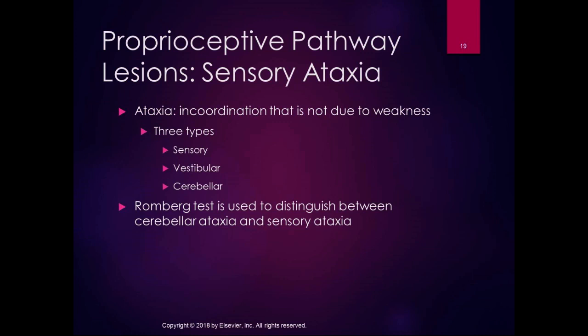The Romberg test — single leg balance with eyes open and eyes closed — is used to distinguish between cerebellar and sensory ataxia. Because sensory information provides position sense, if you close your eyes and lose your balance, that distinguishes it as sensory ataxia. Vestibular ataxia means you lost information from the vestibular system, and cerebellar ataxia is a central nervous system problem. This helps distinguish whether the incoordination is a central or peripheral sensory problem.